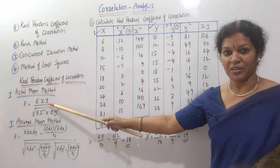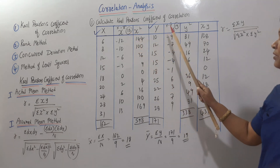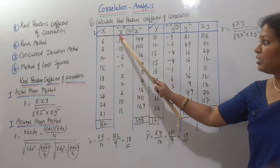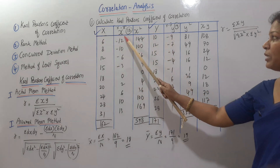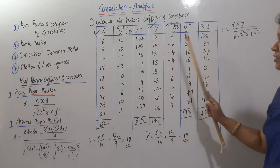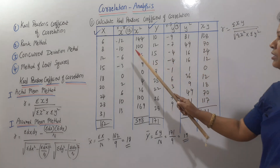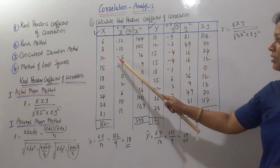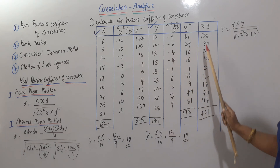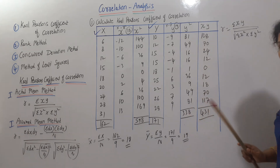In the formula, sigma xy means x multiplied by y. We multiply each small x by the corresponding small y: minus 12 times minus 9 is 108; minus 10 times minus 7 is 70; minus 6 times minus 4 is 24. The total sigma xy is 431.